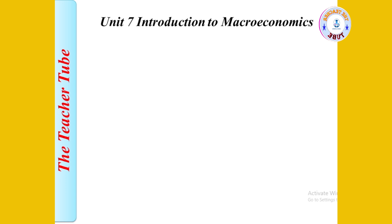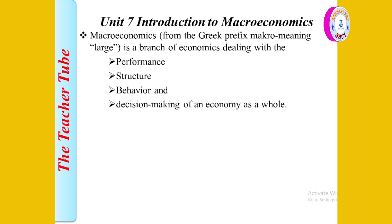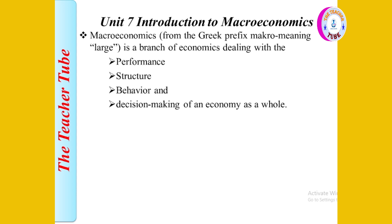Unit 7 is the introduction to macroeconomics. Macroeconomics comes from Greek — the prefix 'macro' means large. This is a branch of economics that deals with macroeconomics. In Greek, 'macro' is the prefix meaning large.